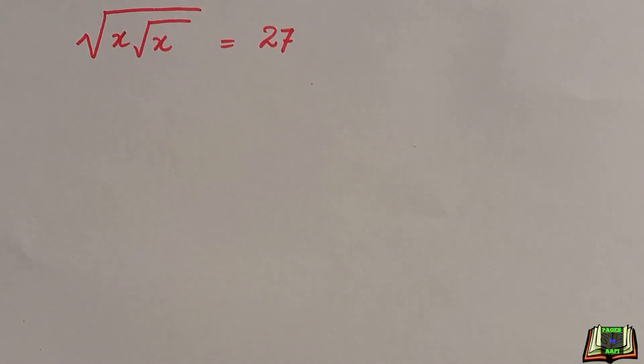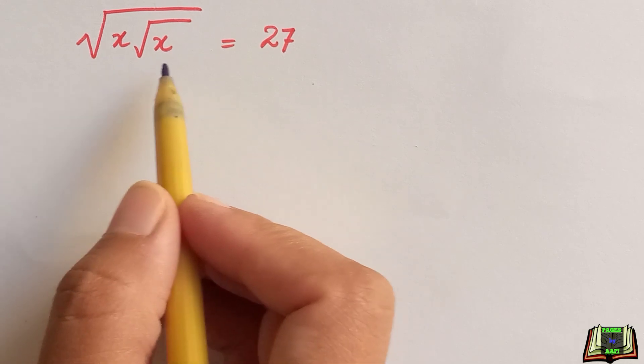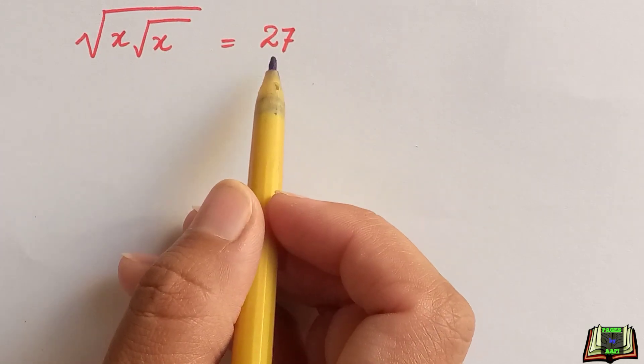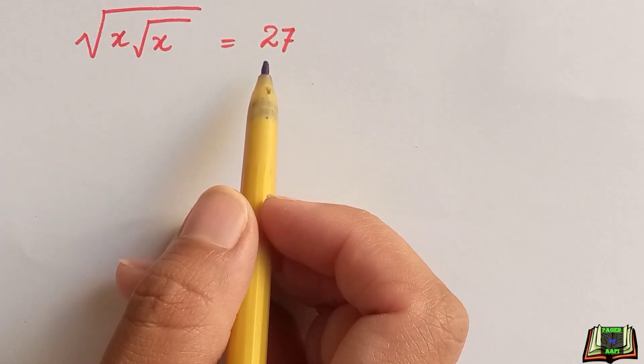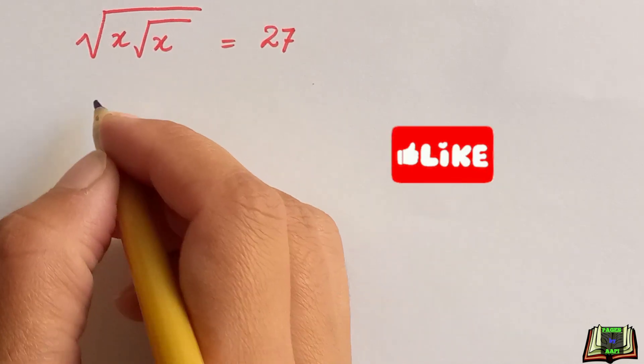Welcome all of you, let's solve this radical question. If square root of x times square root of x is equal to 27, then we are supposed to find out the value of x. So let's simplify this and find out x.